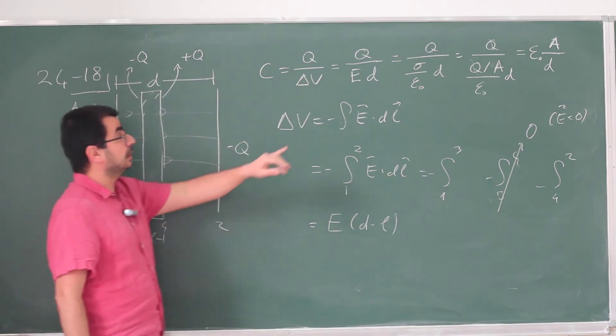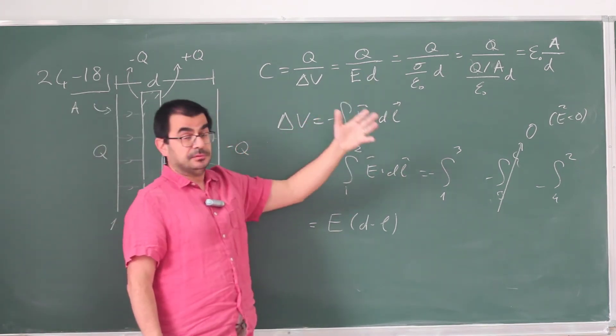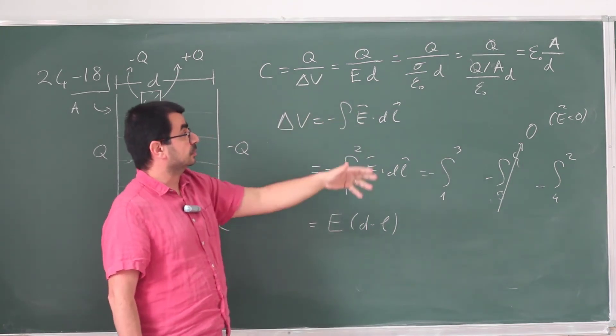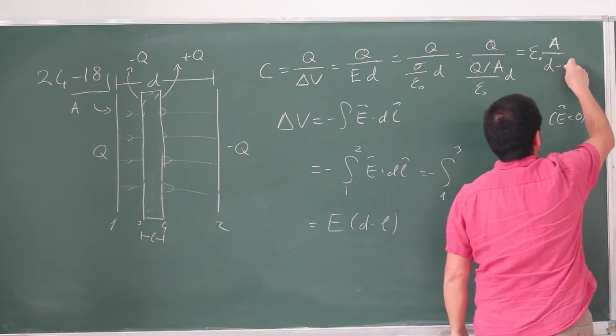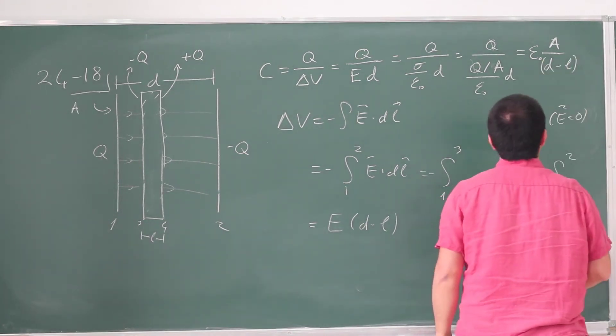So instead of this D, my delta V is going to be E times D minus L. And that's going to get propagated all over. And my capacitance is going to look like this.